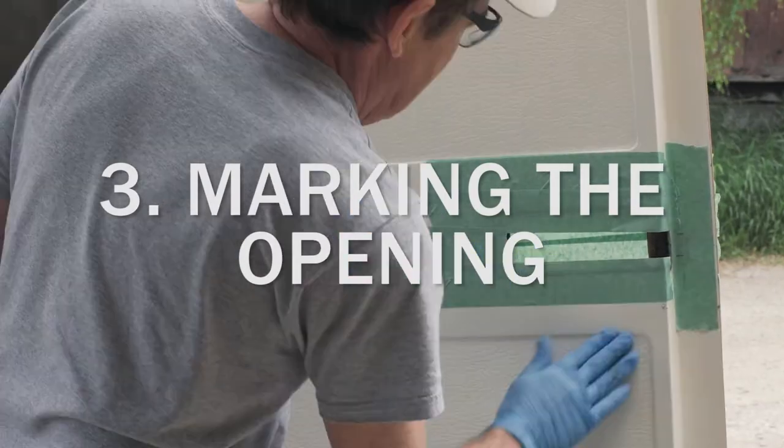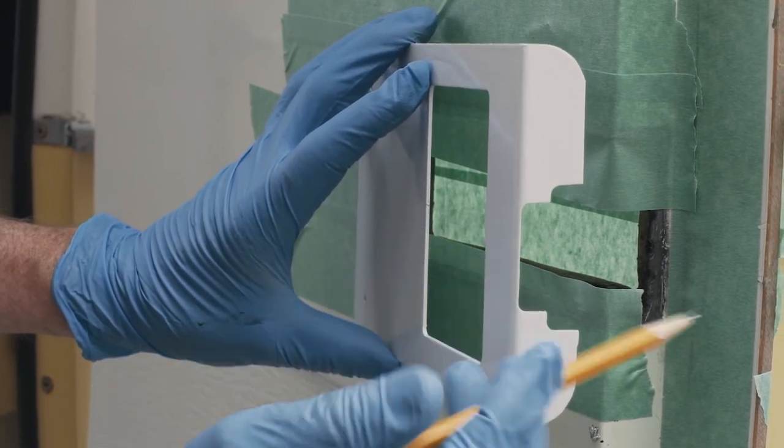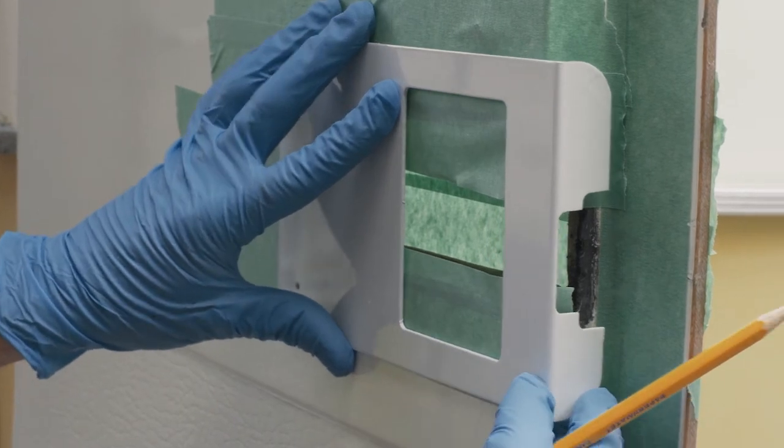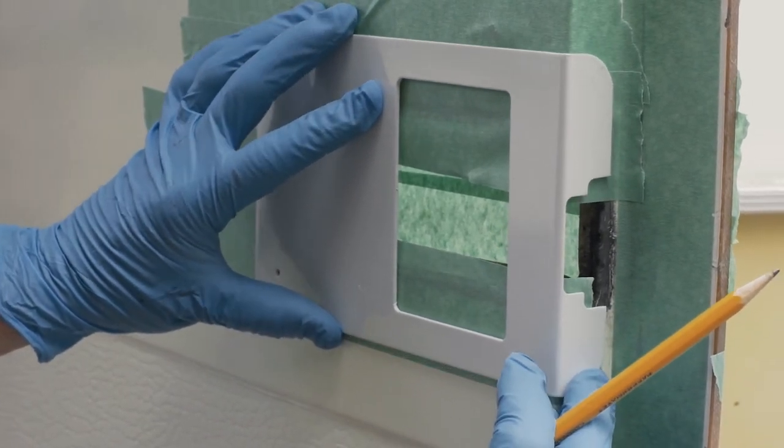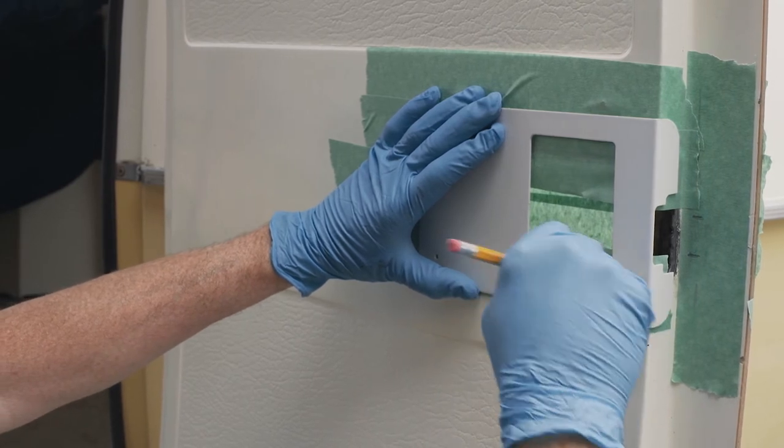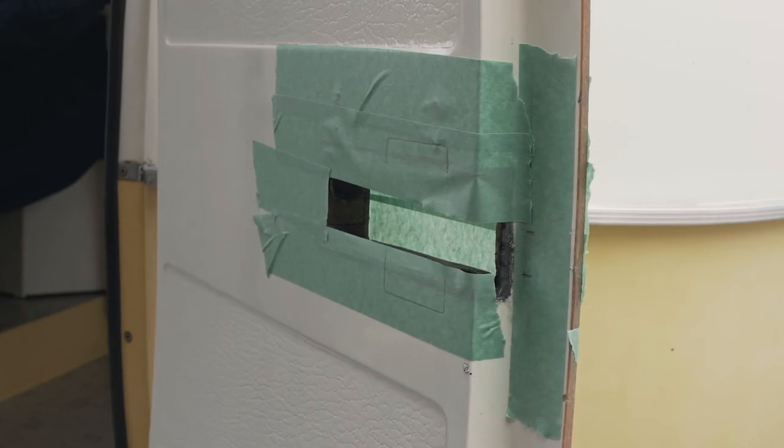Hold the inner adapter plate tight against the surface of the door with the bent edge tight against the edge of the door. Line up the notched edge of the plate with the marks you made on the tape locating the original bolt. With a marker or pencil, draw around the inside of the adapter plate. This will be the cutout for the new lock set.